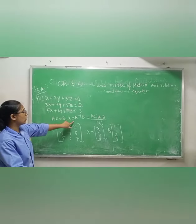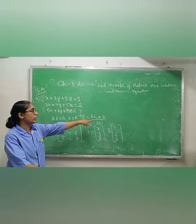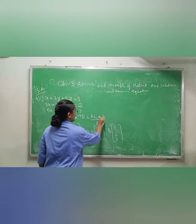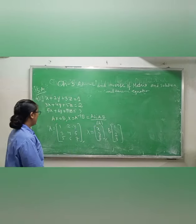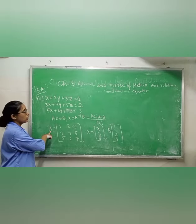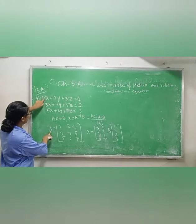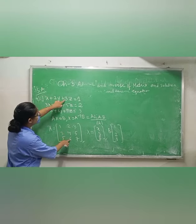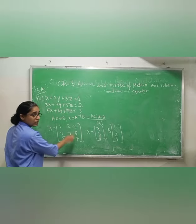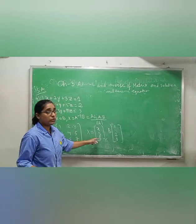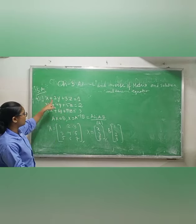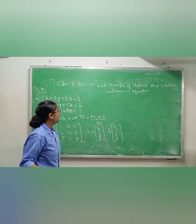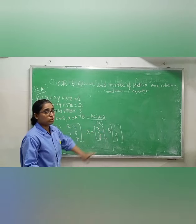We write AX = B, so X = A⁻¹B = adj(A)/det(A) · B. The coefficient matrix A is [1, 3, 5; 2, 4, 6; 3, 5, 7]. X is [x; y; z] since there are three variables. B is the constant matrix [1; 2; 3].